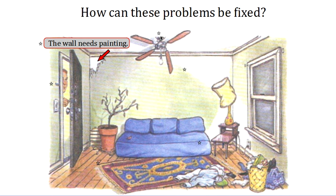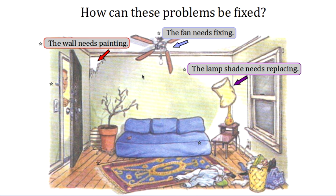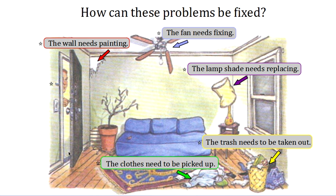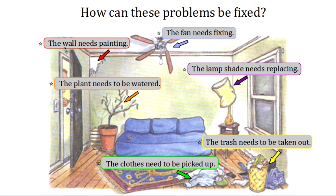And the broken fan? Well, the fan needs fixing, obviously. And the damaged lampshade, what can we do about that? Well, the lampshade needs replacing — we are just going to replace it. What about the trash can? The trash needs to be taken out. And the clothes on the floor — the clothes need to be picked up. And lastly, what about the plant? The plant needs to be watered.